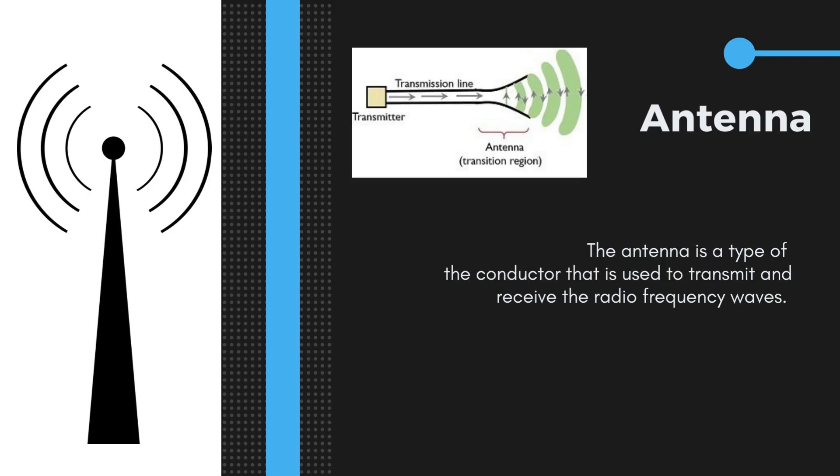The antenna is a type of conductor that is used to transmit and receive radio frequency waves. They convert a high frequency current to electromagnetic waves and vice versa. Three characteristics are of major concern when selecting the antenna: length, polarization and directivity.